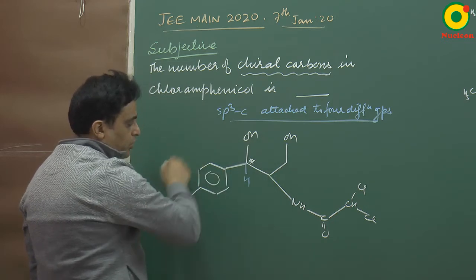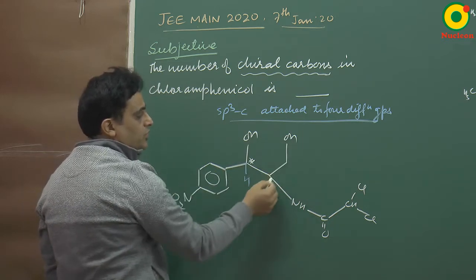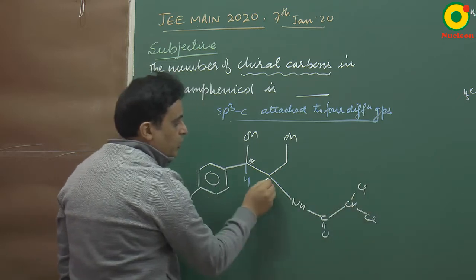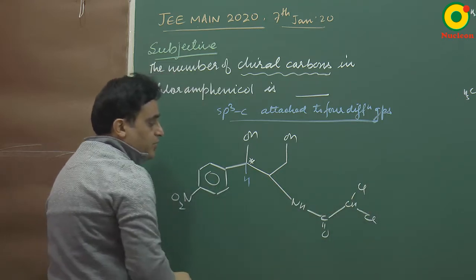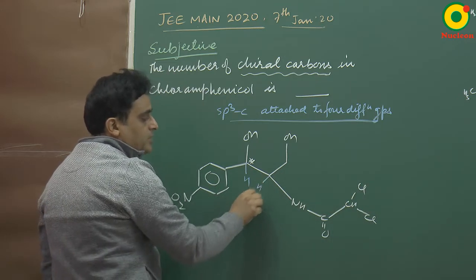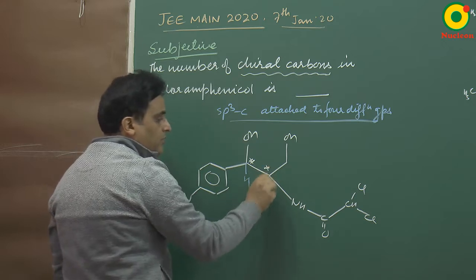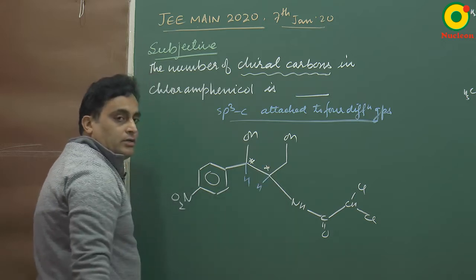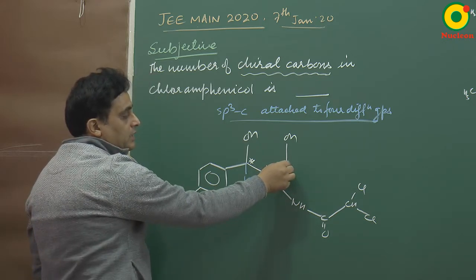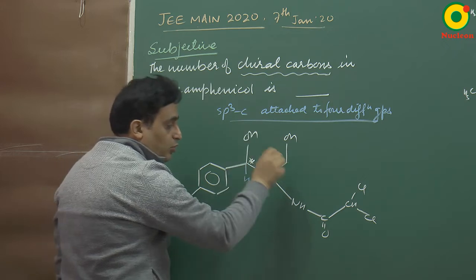On this carbon, we have the CH2OH group, and checking all the attached groups, this carbon is chiral. This molecule has two chiral carbons. This carbon is not chiral because it has two identical H substituents.